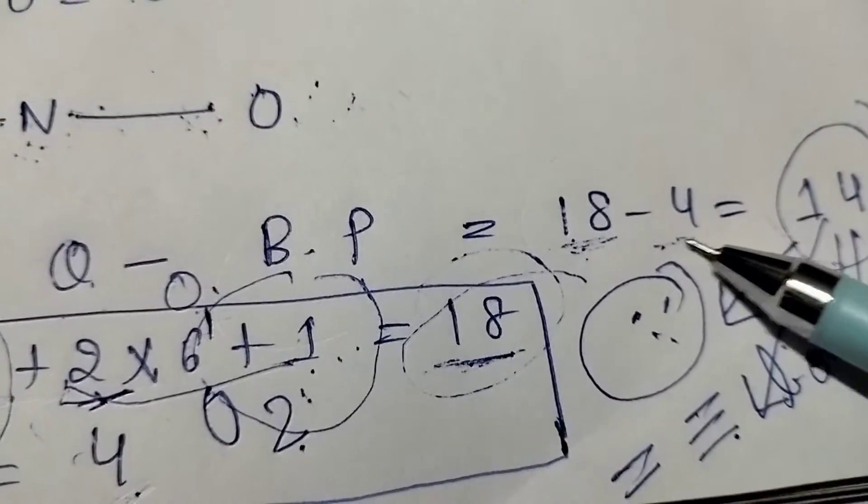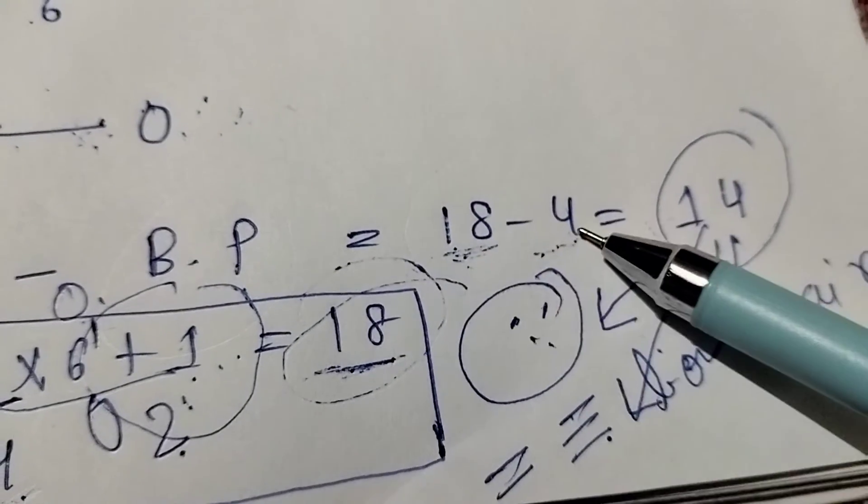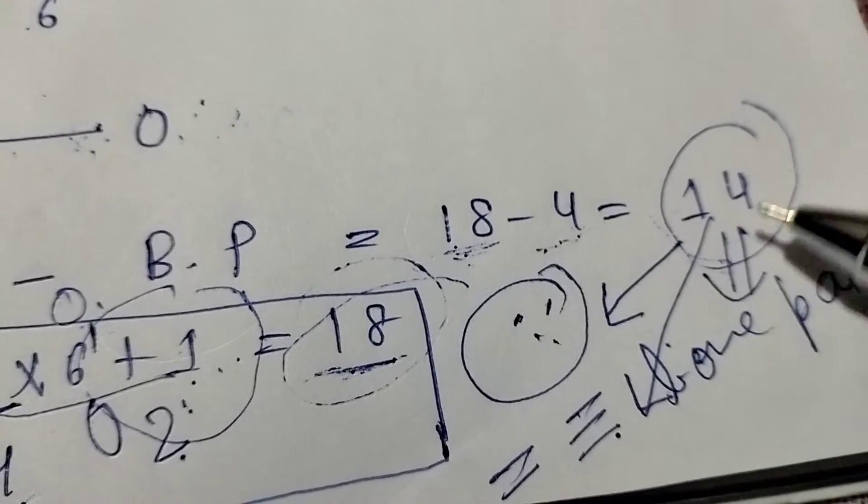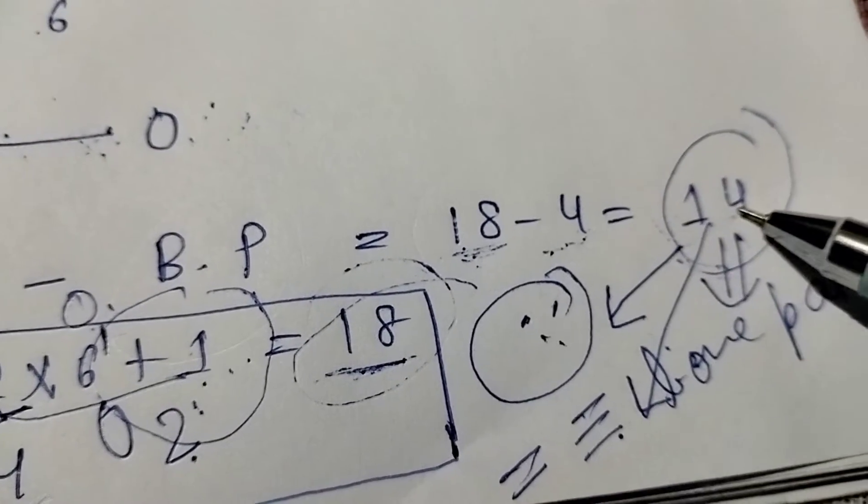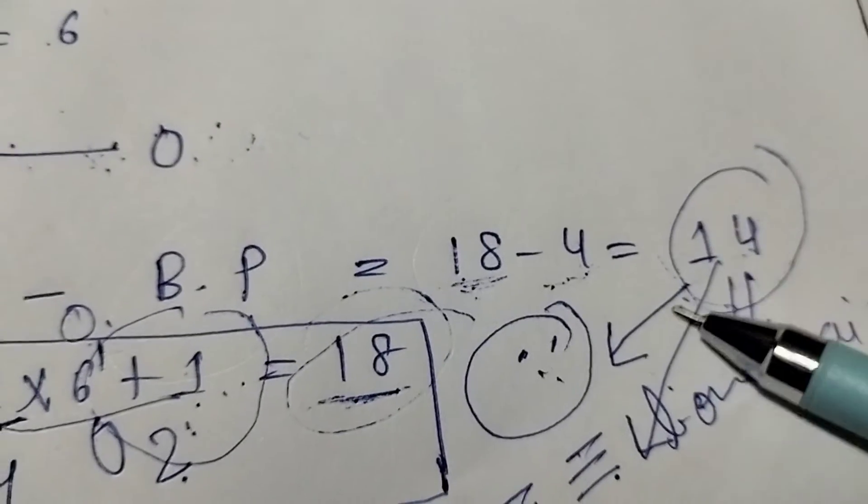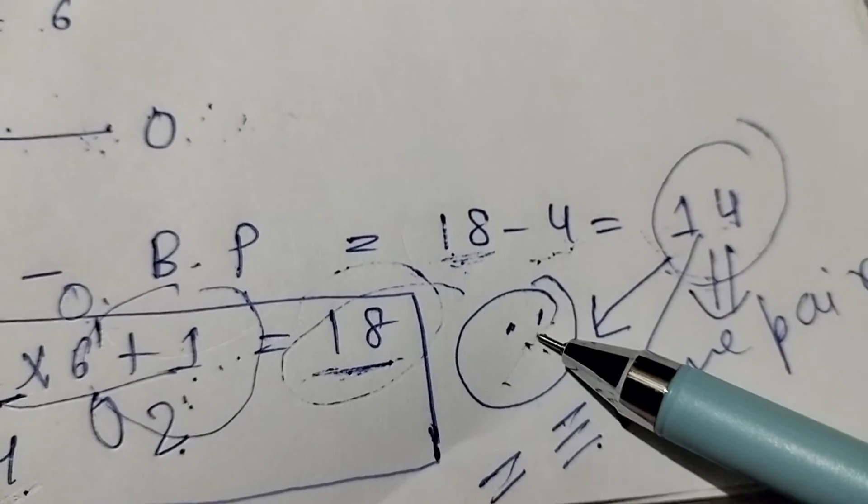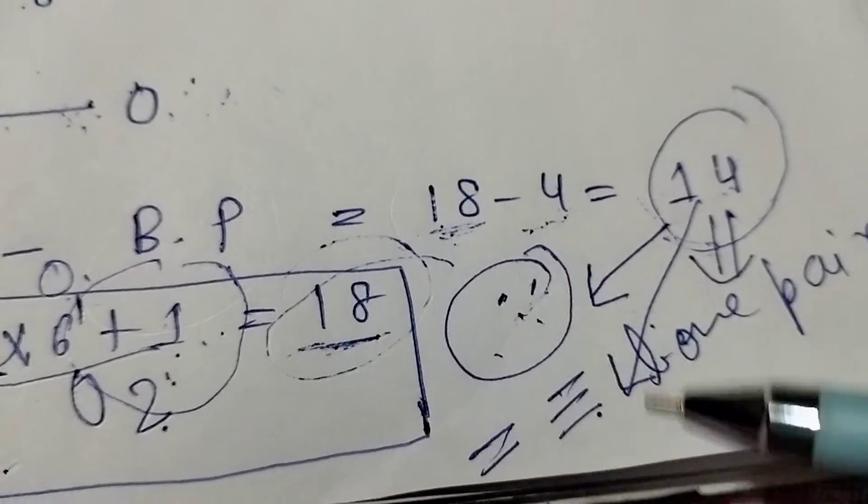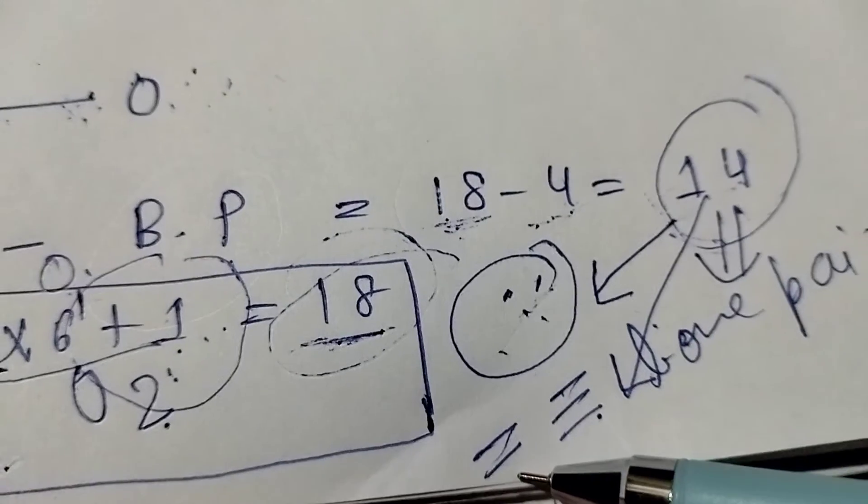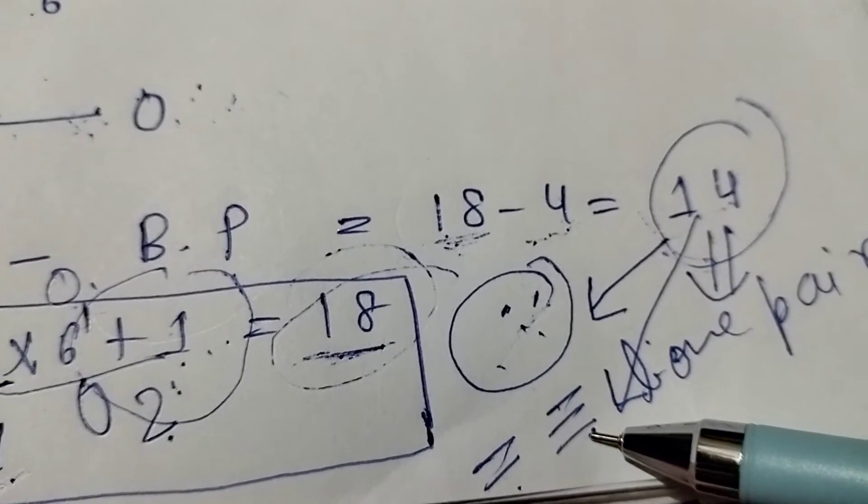Bond pair, this one is four. When we subtract both these, we will get the result 14. And this 14 will be carried out in a form of lone pair and also it will be converted into double and triple bond.